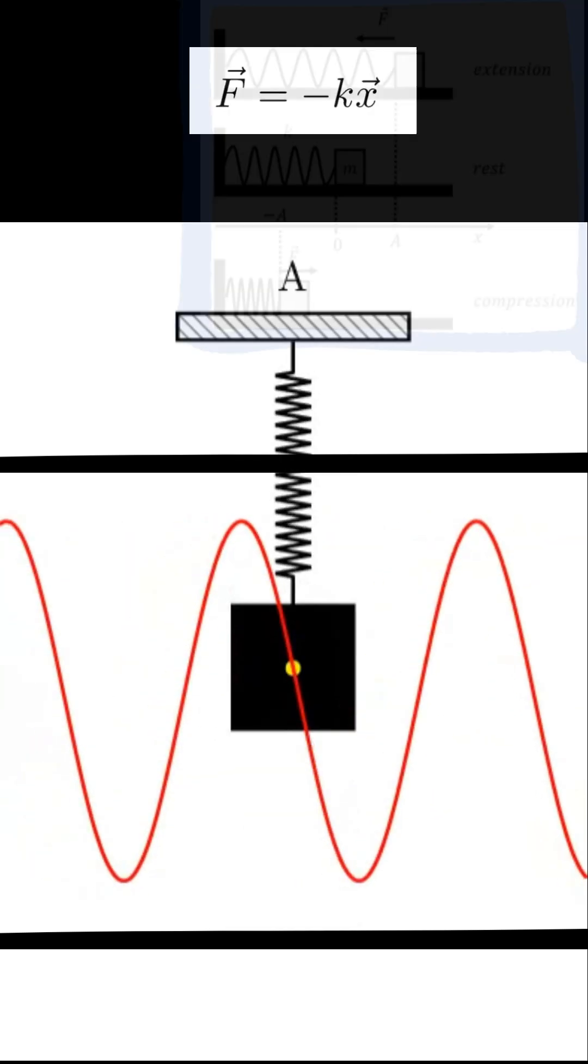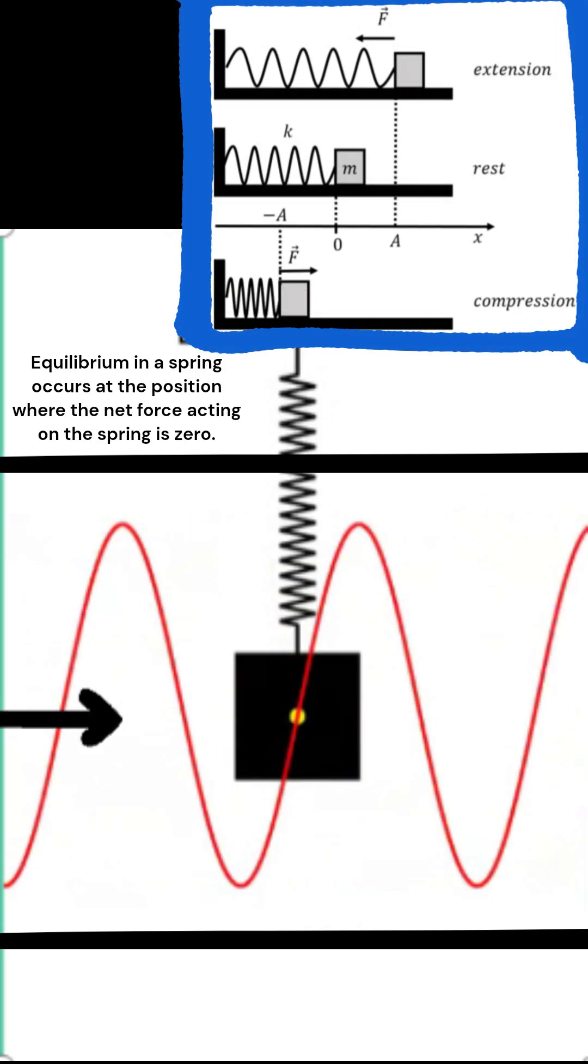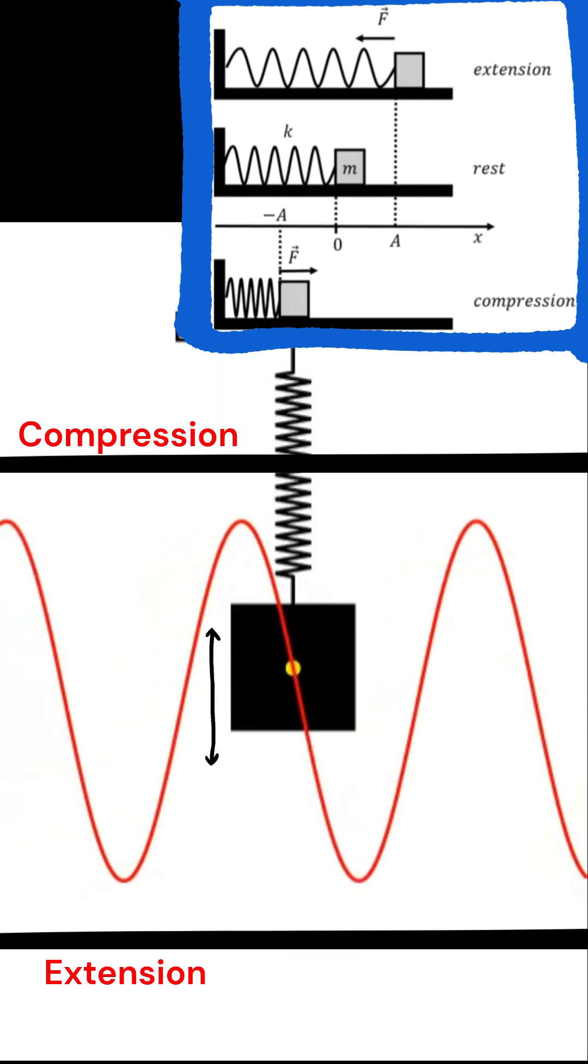Simple harmonic motion is a type of motion that results when the net force on an object is both proportional to and opposite in direction from an equilibrium position.